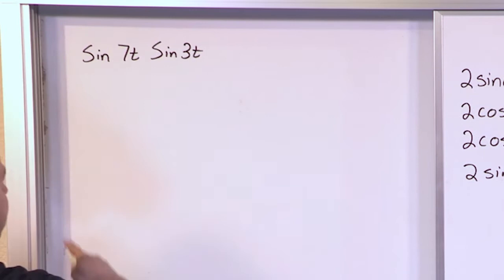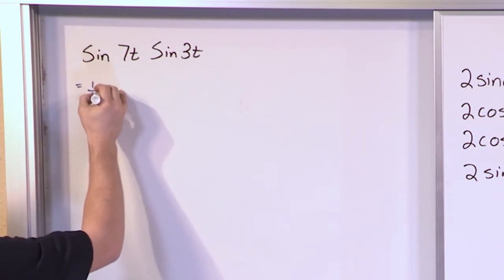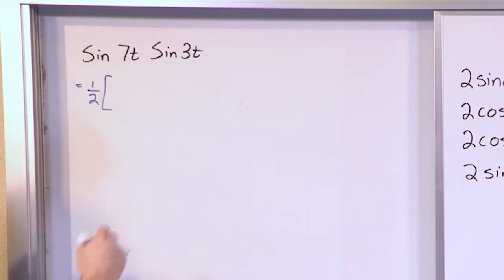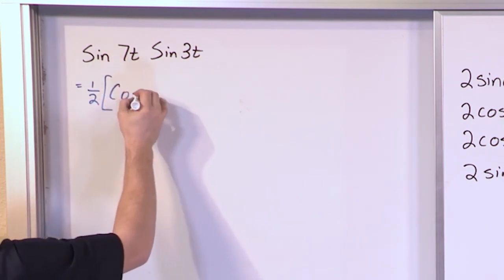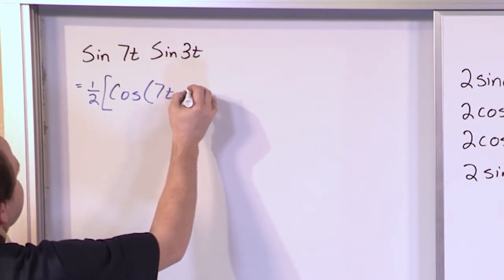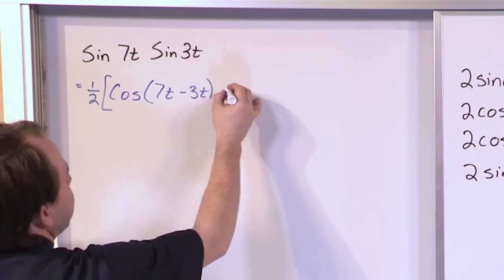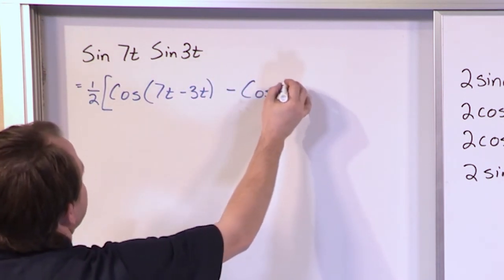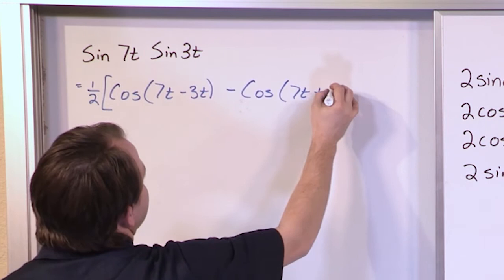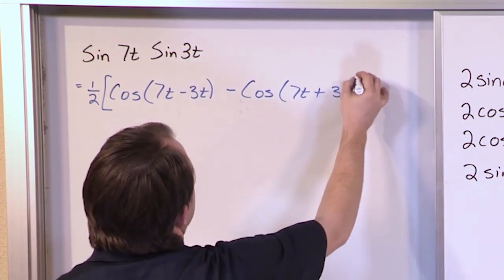So what we really have is 1 half, and inside a bracket, we need to apply our identity, which is cosine of the difference. So cosine of the difference, 7t minus 3t, and then we subtract cosine of the sum of these angles, 7t plus 3t, like this.